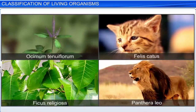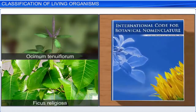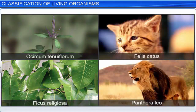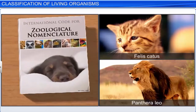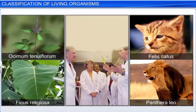To make the process of identification easier, scientists have assigned a scientific or biological name to every known organism. The scientific names for plants are based on the principles and criteria given in the International Code for Botanical Nomenclature, or ICBN, and for animals, in the International Code for Zoological Nomenclature, or ICZN. The procedures to assign a scientific name to an organism have been agreed upon by scientists and biologists all over the world.